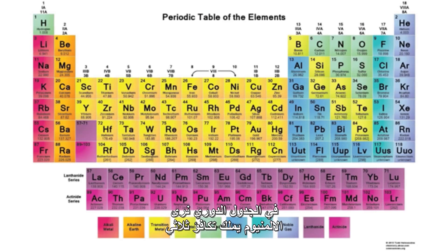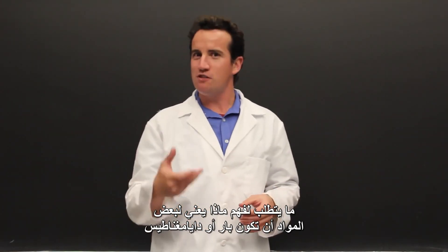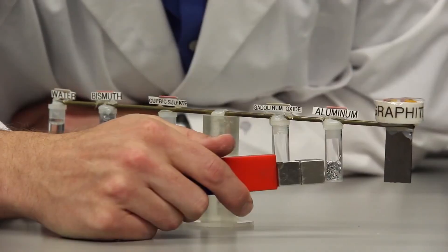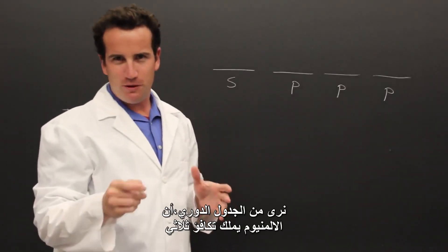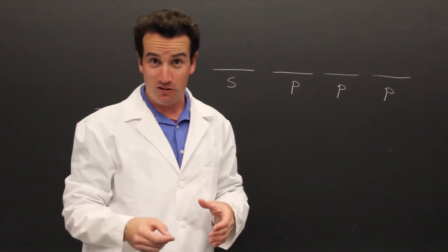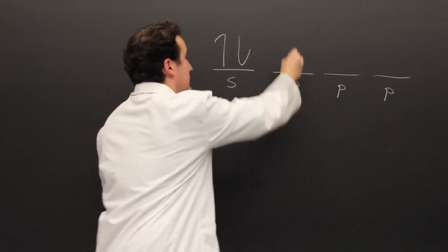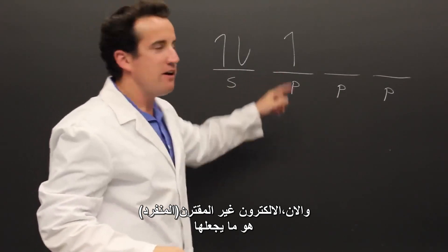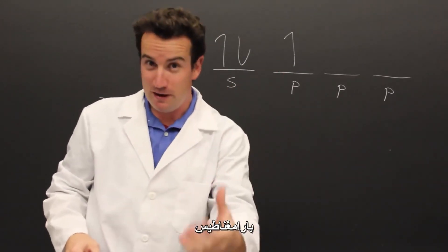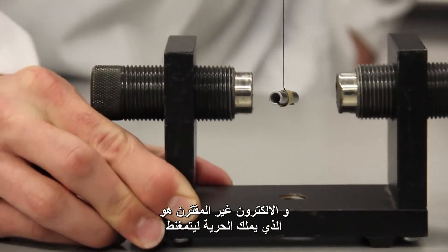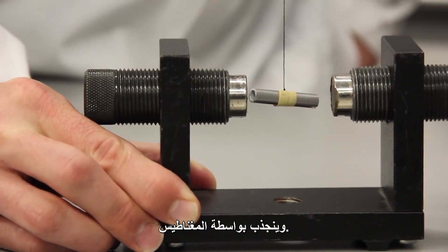On the periodic table, we see that aluminum has three valence electrons — that's 2s and 1p. So what does it take to understand what it means for something to be a paramagnet or a diamagnet? You have to know what the electrons are doing. It's that unpaired electron that makes aluminum a paramagnet — this unpaired electron enables it to become magnetized and be attracted by the magnet.